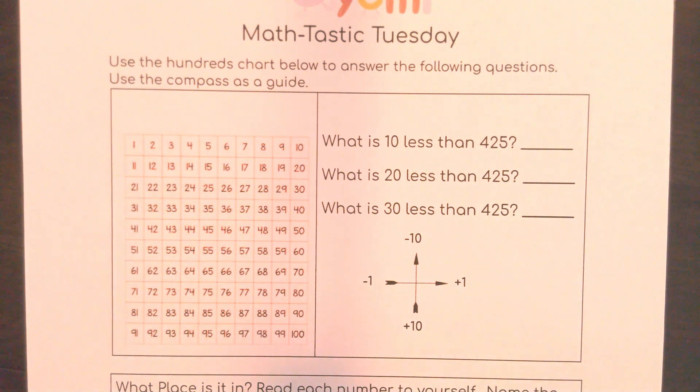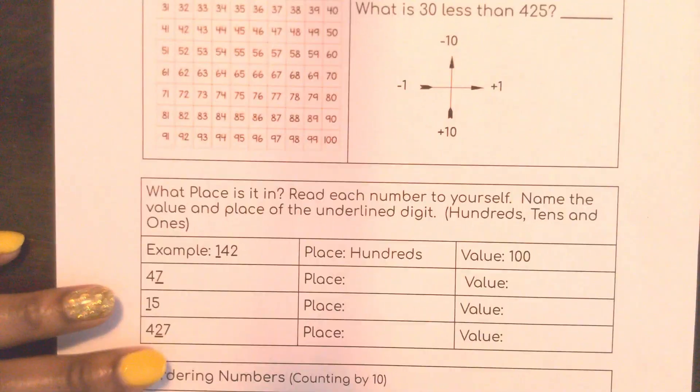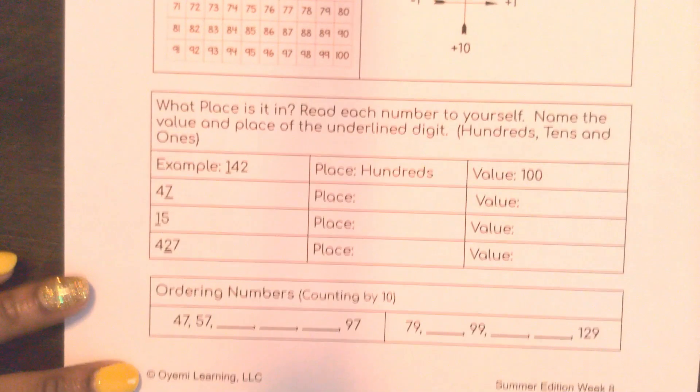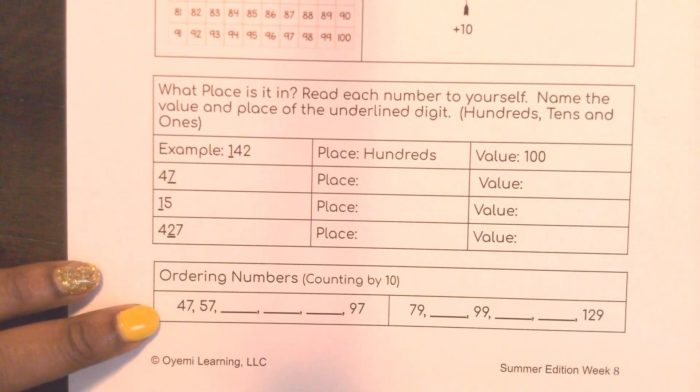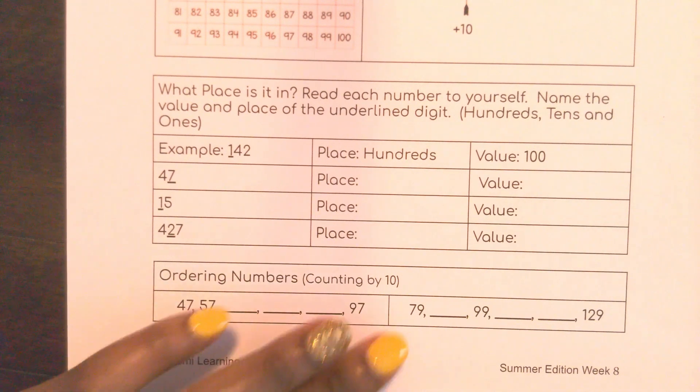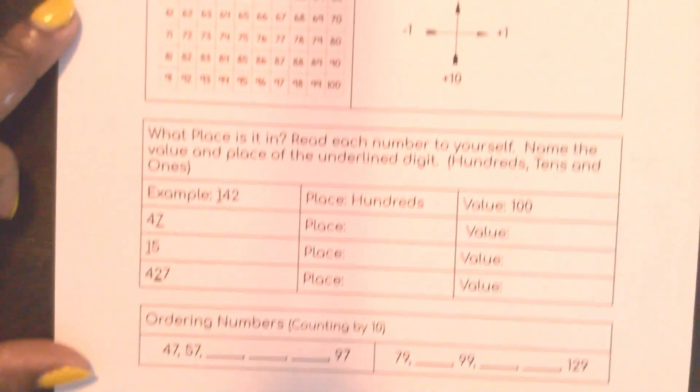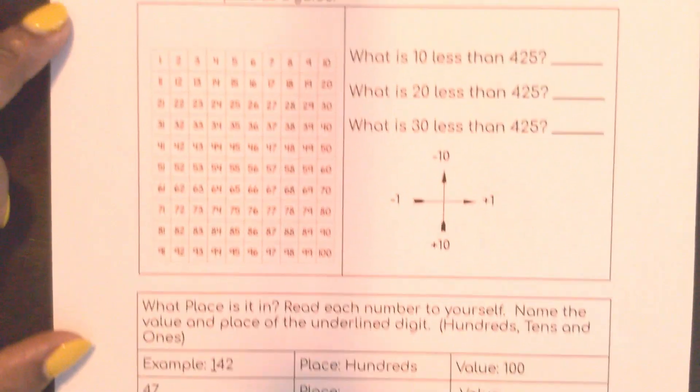Hello there and welcome to a Math-tastic Tuesday. Today we're going to look at patterns on a hundreds chart. We're going to look at what place is it in. Place and value are so important in math. And lastly, we're going to order numbers counting by 10. So here we'll start with 47. Here we'll start with 79 and jump around. So welcome to this Math-tastic Tuesday. Let's get started.